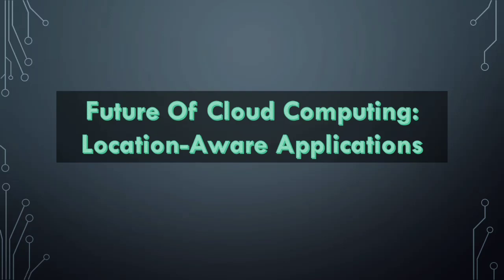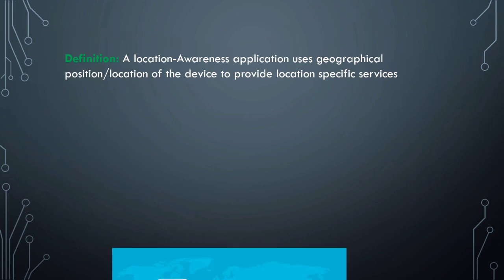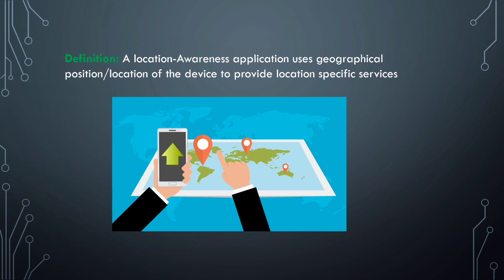Welcome back to my channel, Bodhi Vansi. Today's topic is location-aware applications under the future of cloud computing. By definition, location-aware applications use the geographical position or location of a device to provide location-specific services or content. You would have already used location services on your smartphone — at least Google Maps. Location-aware applications provide content specifically tailored around the geographical location you are currently at.